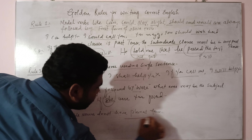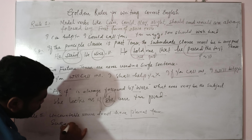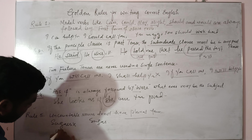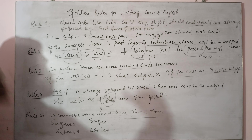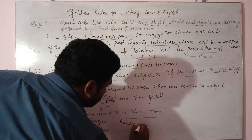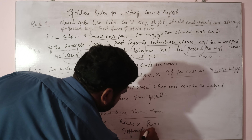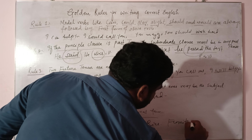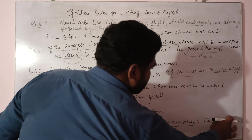Uncountable nouns ki koi plural form nahi hoti. For example: 'sugars' — galat, sirf 'sugar' sahih hai. 'Waters' — agar likhein to meaning tabdeel ho jaye gi. 'Rices' — galat, sirf 'rice'. 'Informations' — galat, sirf 'information'. 'Furnitures' — galat, sirf 'furniture'. Yeh sab uncountable nouns hain jin ki hum plural form nahi bana sakte.